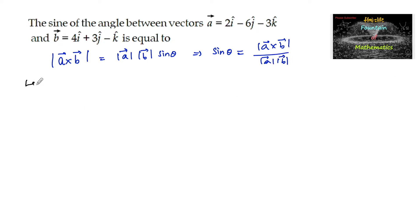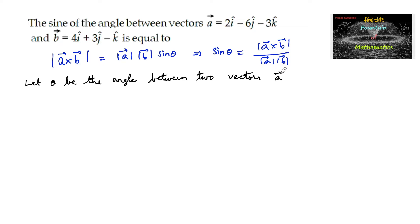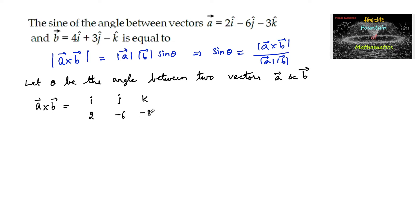Let θ be the angle between the two vectors a and b. Now let us find the cross product a × b. Setting up the determinant with i, j, k in the first row, scalar components of vector a are 2, −6, −3, and scalar components of vector b are 4, 3, and −1.